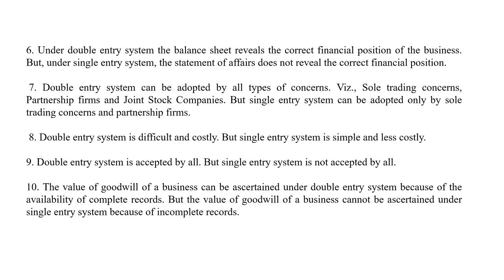The last difference: the value of goodwill of a business can be ascertained under the double entry system because of the availability of complete records. But the value of goodwill of a business cannot be ascertained under the single entry system because of incomplete records.